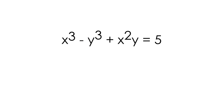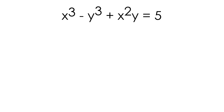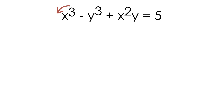Let's start on the left hand side of our equation and take the derivative of the x cubed term. We take our exponent of 3, multiply it in front of the x, and the new exponent is subtracted by 1 — so 3 minus 1 equals 2. Now let's take the derivative of the negative y cubed term.